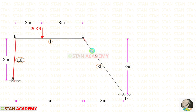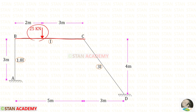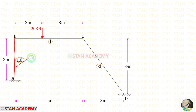In AB and CD, there is no load. In the member BC, there is an eccentric point load of 25 kN acting at a distance of 2 m from joint B. The moment of inertia for AB is 1.8i, for BC it is i, and for CD it is 3i.